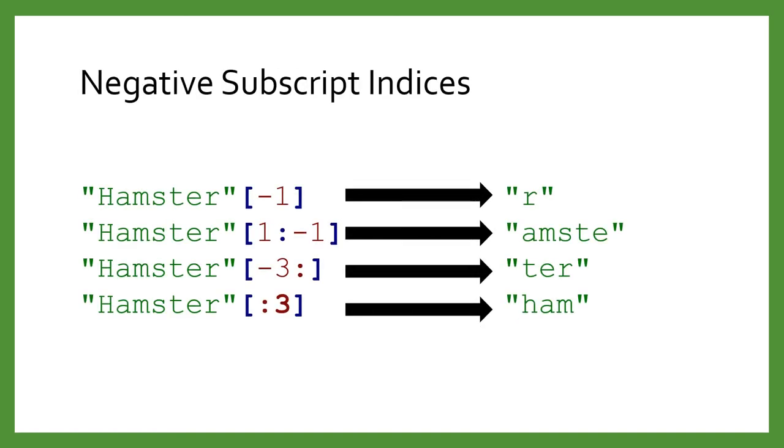If you use negative numbers as subscript indexes, you can work from the back of the list. If you use negative 1, then you get the last character. You can combine positive and negative numbers in your indexes. To go from the start or the end, simply leave the number missing.